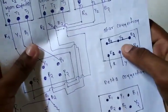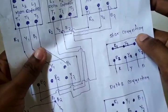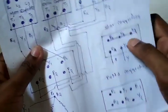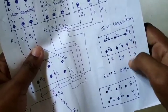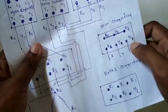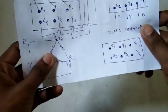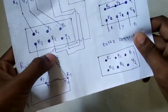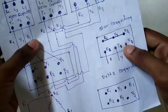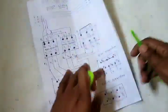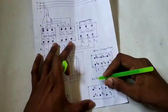So star connection is shorted third. Star contactor is shorted third. Delta is shorted second. This is the star connection. This is delta. This is star. So here is star connection and this is delta.